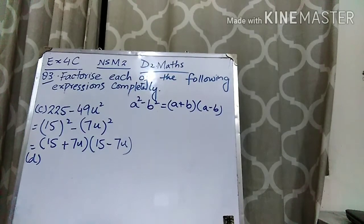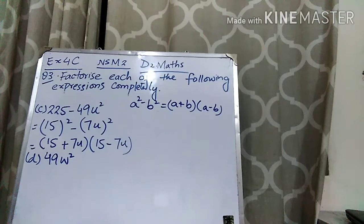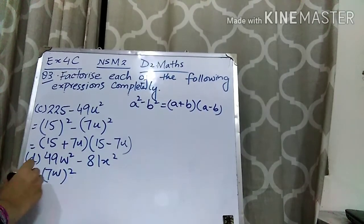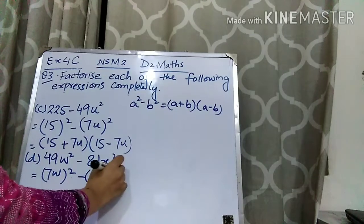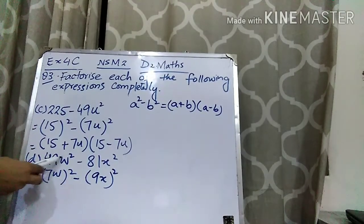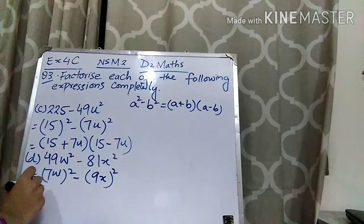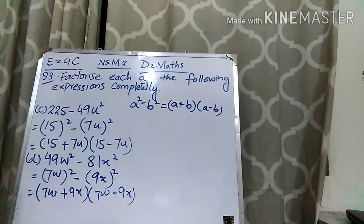The last part is 49W squared minus 81X squared. 49 is the perfect square of 7, so I can write 7W whole squared. And 81 is the perfect square of 9 — when you multiply 9 by 9 you get 81 — so I can write 9X whole squared. I have written these two terms in square form, made the formula A squared minus B squared, and it equals A plus B times A minus B. I hope question number 3 is clear to you.